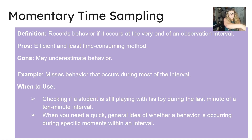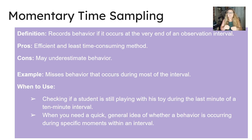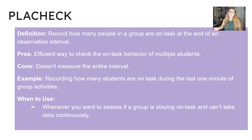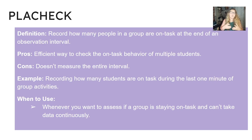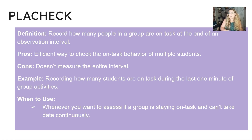Momentary time sampling records behavior only if it occurs at the very end of an observation interval. It's the most efficient and least time-consuming method, but may underestimate behavior. Use it when checking if a student is still playing with a toy during the last minute of an interval. Placheck records how many people in a group are on task at the end of an observation — the keyword is group. It's a sufficient way to check on-task behavior of multiple students, though it doesn't measure the entire interval. Use it when you want to assess if a group is staying on task.